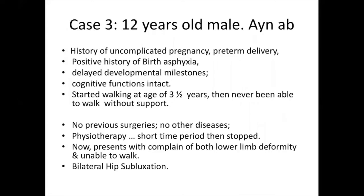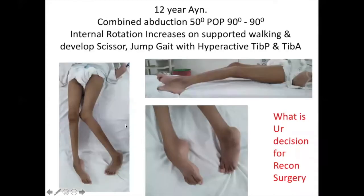Another case: a 12-year-old male with delayed milestone, normal cognitive functions, started walking at 3 years of age, no previous surgery, no other disease, short-time physiotherapy. He presents with bilateral lower limb deformity and bilateral hip subluxation. This is the worst type of deformity — he is not able to walk. There is a hygienic problem and difficulty in sitting even on the bed because of contractures and stiff internal rotations.